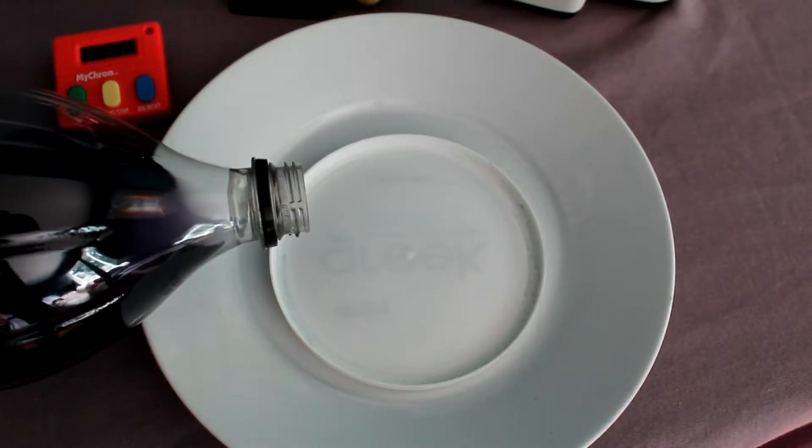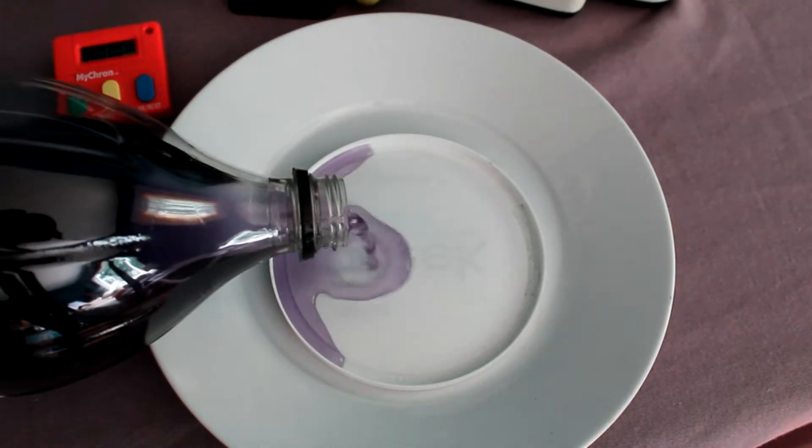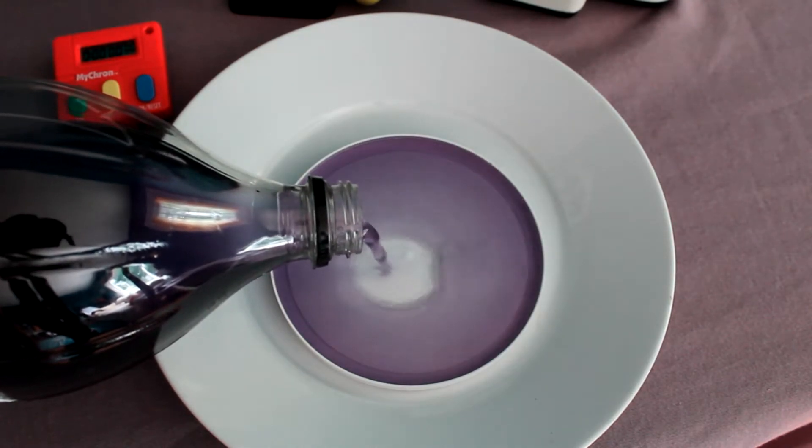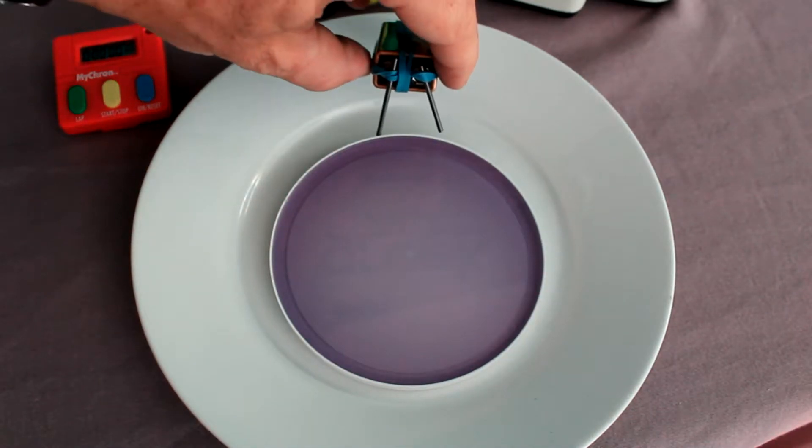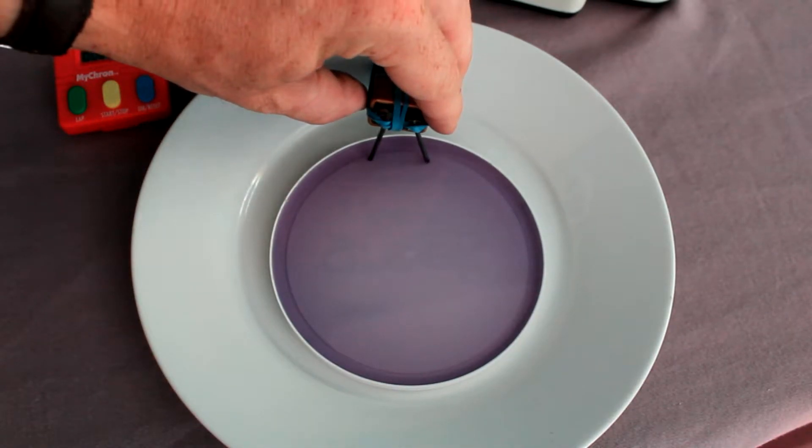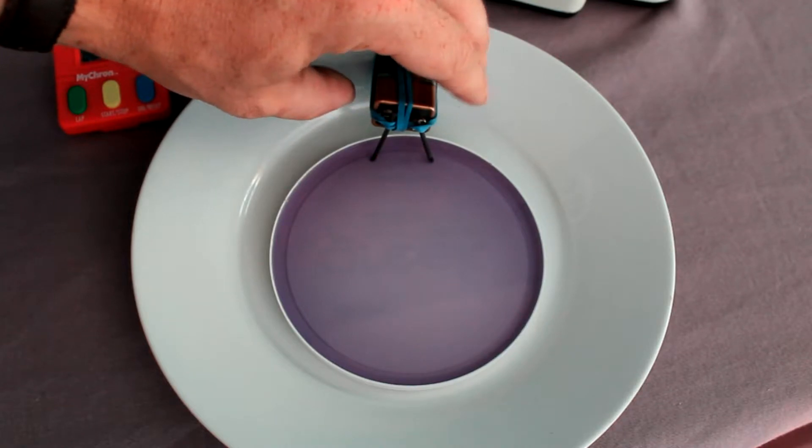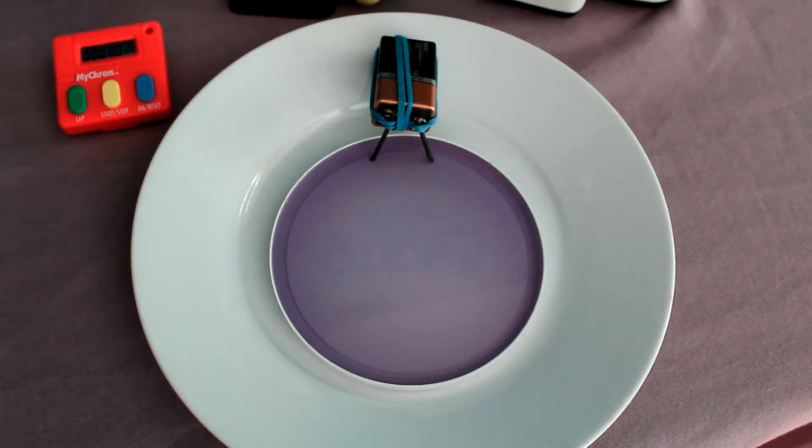Now pour indicator solution into your dish. If you're using a dish that's deeper than mine, you actually don't want it too deep. If it's too dark in color, you won't easily be able to see color changes happen. Once your indicator solution's in there, place your electrodes at the edge of the dish. And just lean your battery there and let the electrolysis take place. See if you can notice any initial observations.